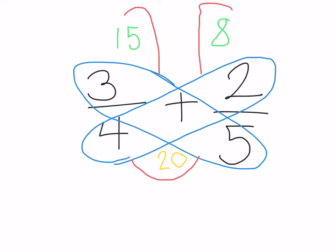Lastly, to get your answer, you would add the two numbers in the antenna, so 15 plus 8 is 23. And that was your numerator, and your denominator is the number at the bottom, so 20. So your answer is 23 over 20.